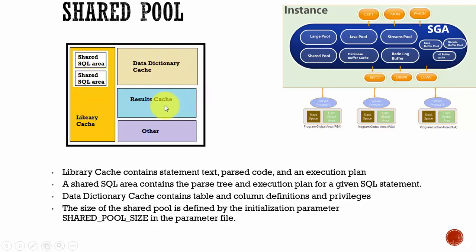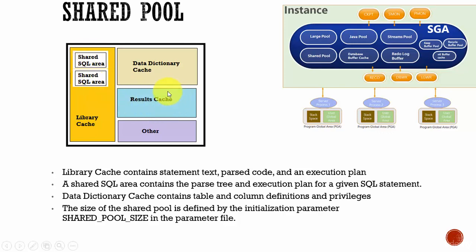The third important component of a Shared Pool is the Results Cache. The Results Cache stores both the SQL query result and the PL/SQL function result. Whenever a user runs a SQL query, the results can be cached — that means stored in memory. If the same SQL query with the same parameters is run by the same user or a different user, the database can just retrieve the answer stored in the Results Cache without re-executing the SQL query. This leads to tremendous performance improvement. For example, if you say SELECT COUNT(*) FROM customer and it returns 10, that 10 is stored in the Results Cache.